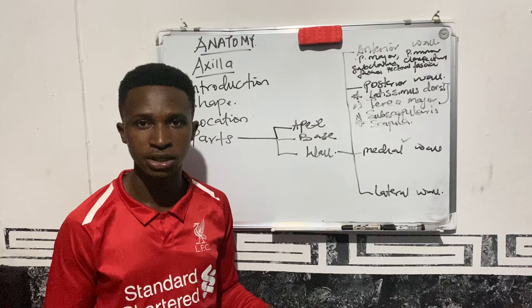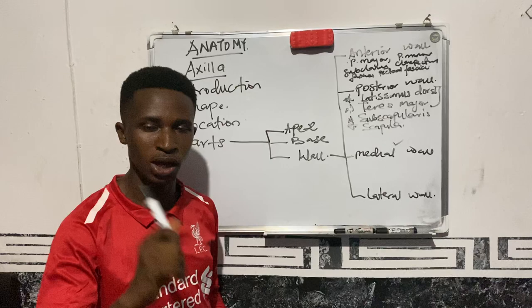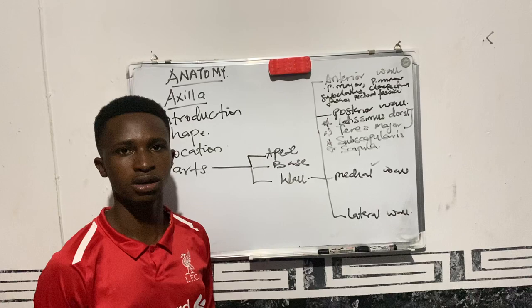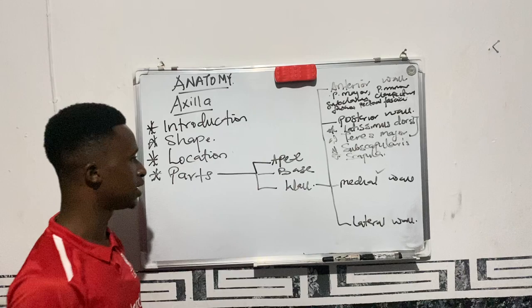This may be asked in your exam: the axilla has four walls — two are bony, true or false? It is false. The axilla has four walls, and only one of them is bony, and that is the lateral wall formed by the inter-tubercular groove of the humerus.